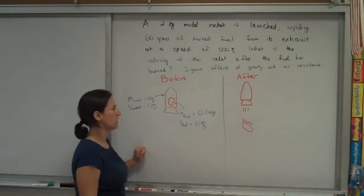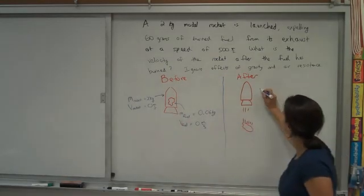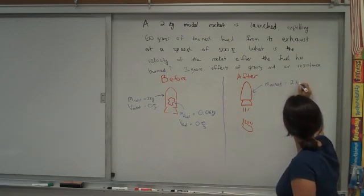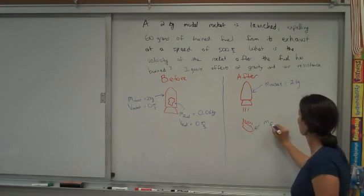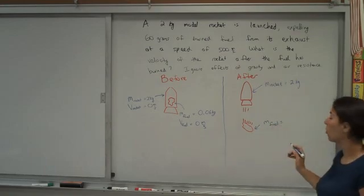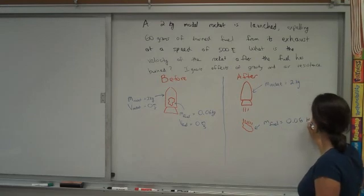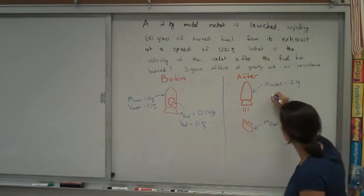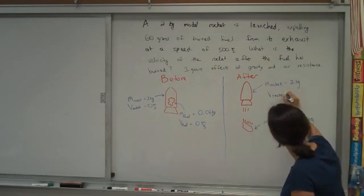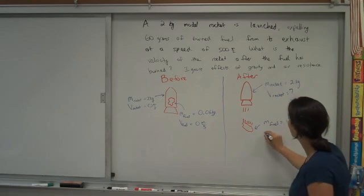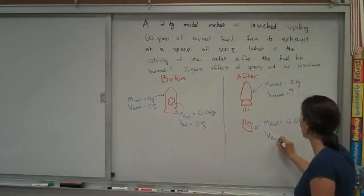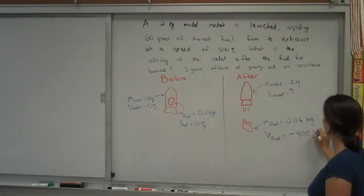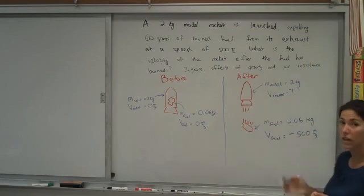Afterwards, it's another story. The mass hasn't changed. The rocket is still 2 kilograms. The fuel is still 0.06 kilograms. But now the velocities are quite different from zero. The rocket is moving upward, and we're curious what that velocity of the rocket is afterwards. That's our question. And the fuel is moving downwards. I should really call it a negative velocity. And it's 500 meters per second. So this is the situation before, and this is the situation afterward.